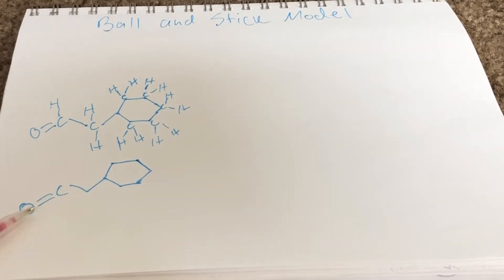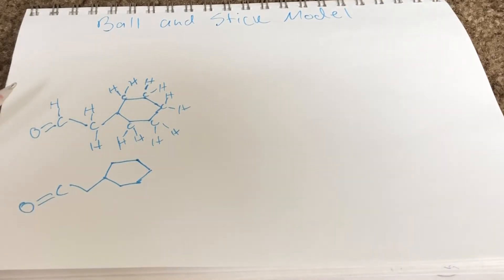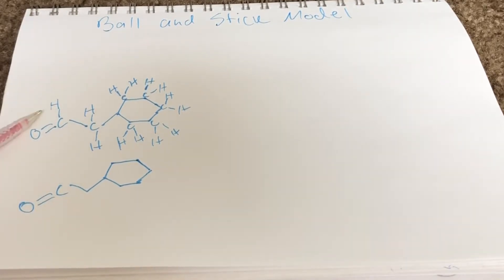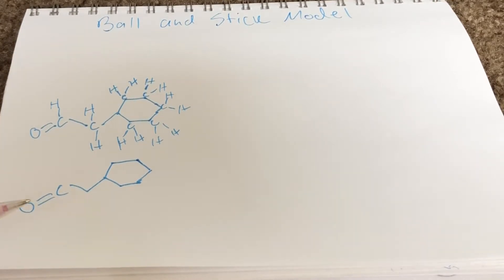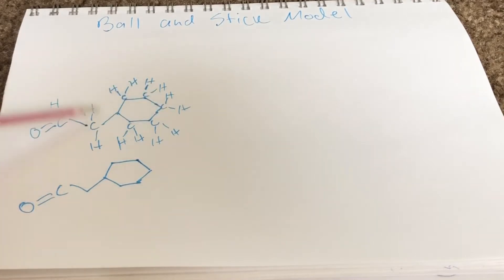When drawing a ball-and-stick model for a molecule, we don't add in letters for the carbons or the hydrogens. Why? Because there are so many carbons and hydrogens that compose a molecule that it just clutters the whole page. So therefore we make it simple and clean.